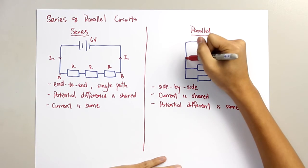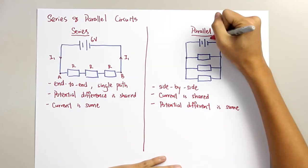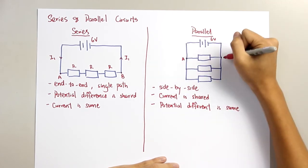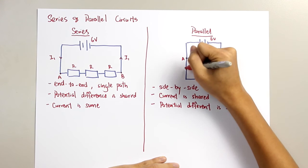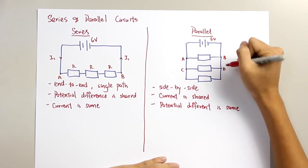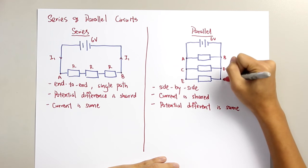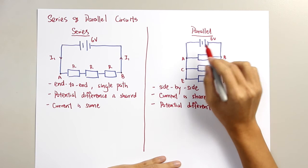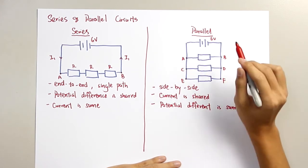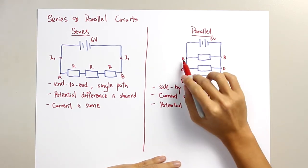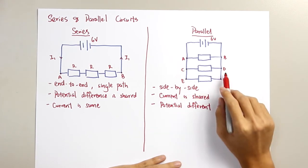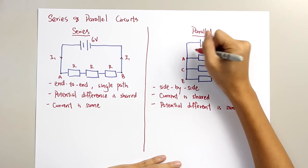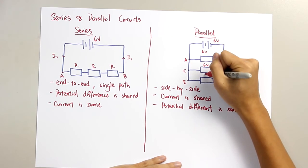Same thing, we provide a 6V power supply here. And then, I label this as A, B, C, D, E, and lastly, F. So, when the 6V power supply are provided in this circuit, the potential difference between A and B, C and D, and also E and F, they have the same potential difference of 6V, 6V, 6V.